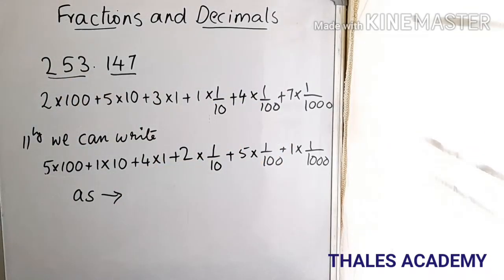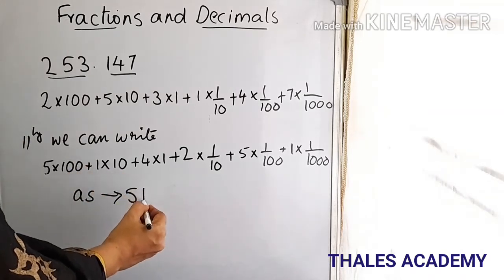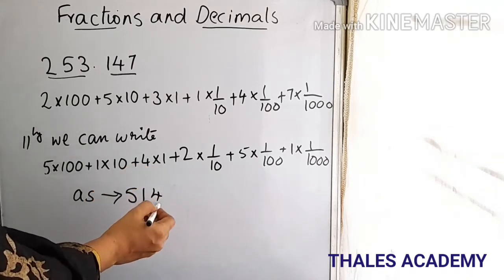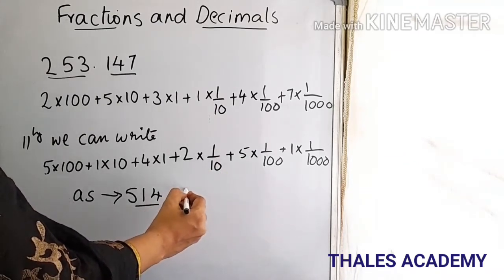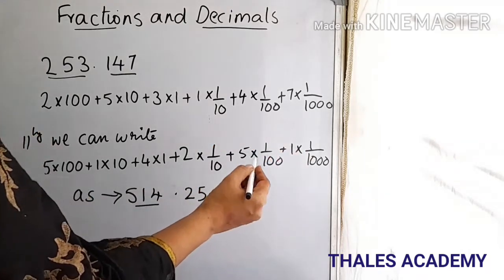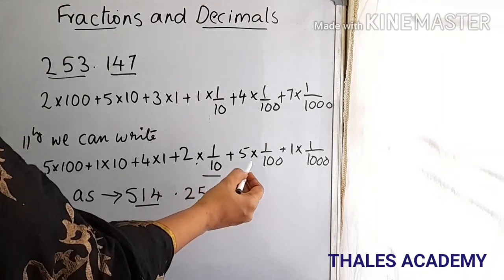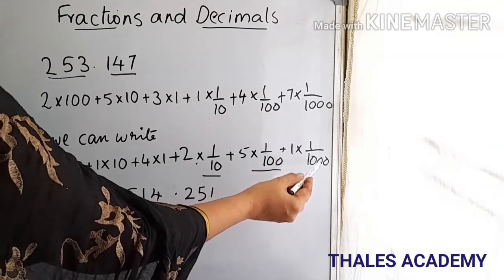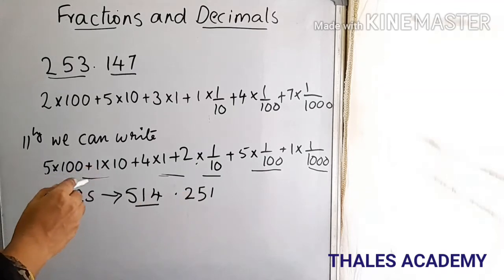From this expanded form: 5 hundreds is 500, plus 1 ten, plus 4 ones — that is the number on the left of the decimal point. On the right of the decimal point: 2 into 1/10, plus 5 into 1/100, plus 1 into 1/1000. So the right of the decimal point gives us 251, and we can rewrite the expanded form as 514.251.